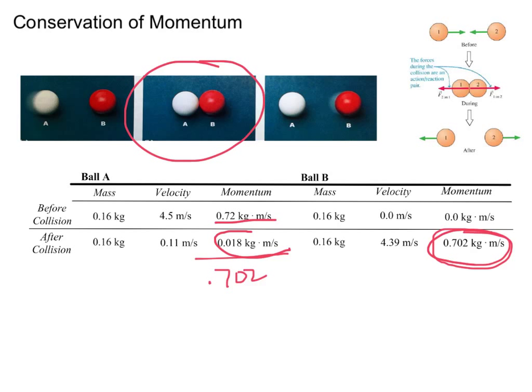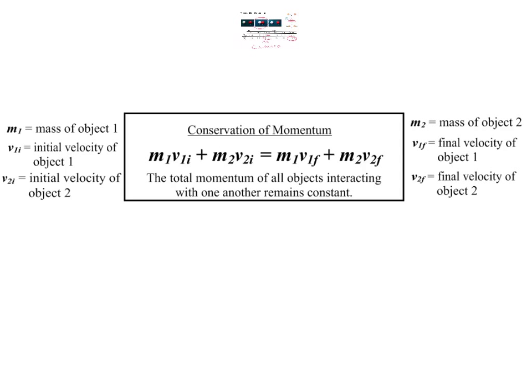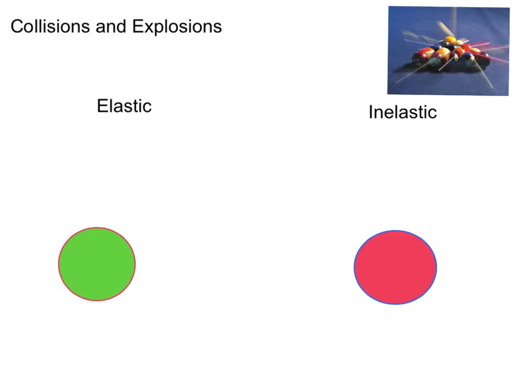We say that the momentum is conserved, and this leads us to introduce the law of conservation of momentum. This law simply states that the total momentum of all objects interacting with one another in a system remains constant. Simply stated, the momentum of a system prior to some interaction between two or more objects is equal to the momentum of that entire system after that interaction. Collisions between objects occur all the time, and the law tells us that the total momentum before a collision will equal the total momentum after the collision.